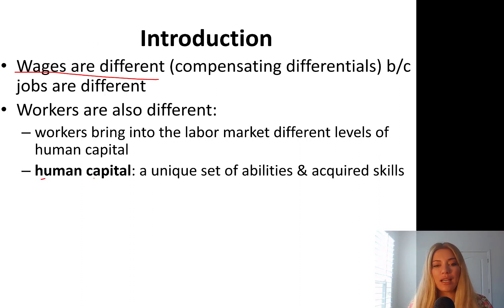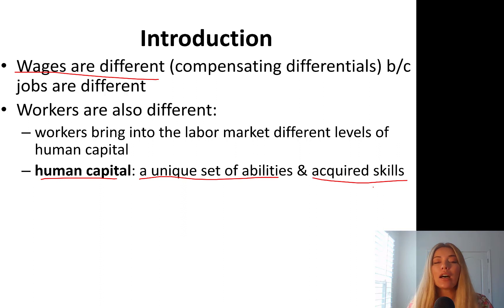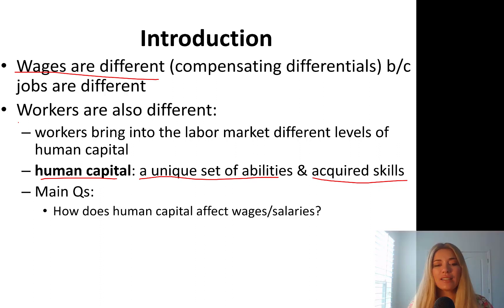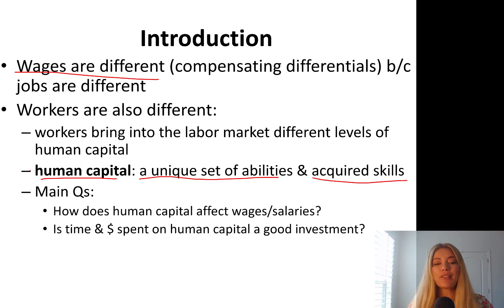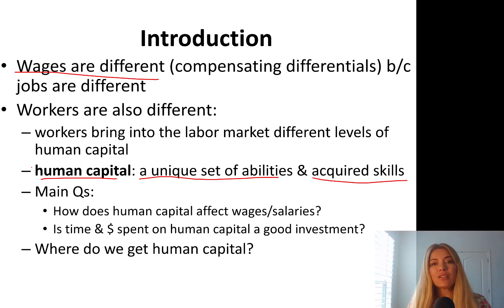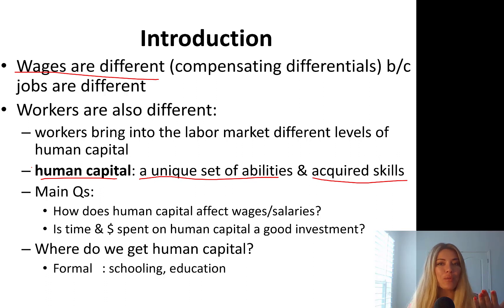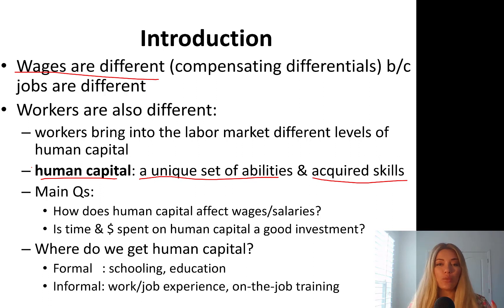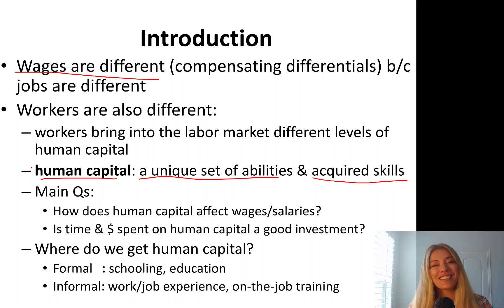Human capital — how do we define it? It's a unique set of abilities and acquired skills. It not only includes education, it also includes other soft skills. The main questions we ask are: how does human capital affect wages and salaries, and is time and money spent on human capital a good investment? The formal source of human capital is schooling and education. We also have informal sources: work, job experience, and on-the-job training. On-the-job training can be firm-specific or general training. We'll learn all about these things in this chapter.